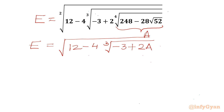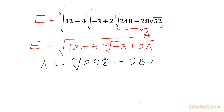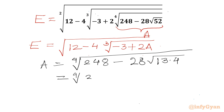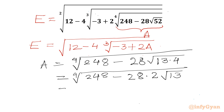Now we have to calculate A. A will be the fourth root of 248 minus 28 times square root of 52. We can write 52 as 13 times 4, so this 4 will come out from the square root as 2, giving us: A equals the fourth root of 248 minus 56 square root of 13.